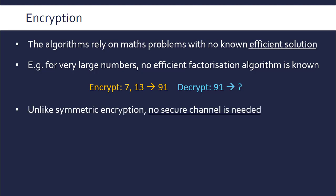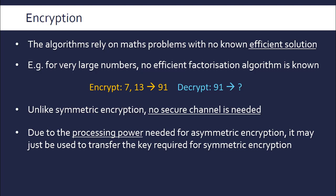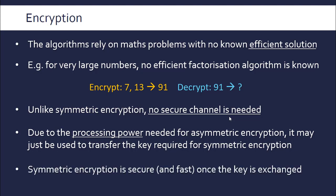Unlike symmetric encryption, no secure channel is needed to exchange the key in the first place. The private key is kept private — no one knows it — so there's no issue transmitting it, and the public key is safe to give to everyone. However, because asymmetric encryption deals with very complicated problems and extremely large numbers, it requires a lot more processing power. Symmetric encryption is relatively straightforward and secure enough without dealing with those huge numbers. For this reason, asymmetric encryption is often used just to transfer the key required for symmetric encryption — we use asymmetric encryption to securely exchange the key, then switch to symmetric encryption because it's faster. Symmetric encryption is perfectly secure as long as the key is kept secret.